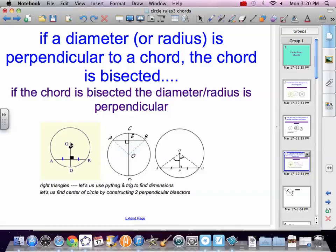Finally, diameters like to cut chords in half, in a perpendicular manner. So diameter, perpendicular, bisect. Radius works the same. So perpendicular, it's going to be a bisector.